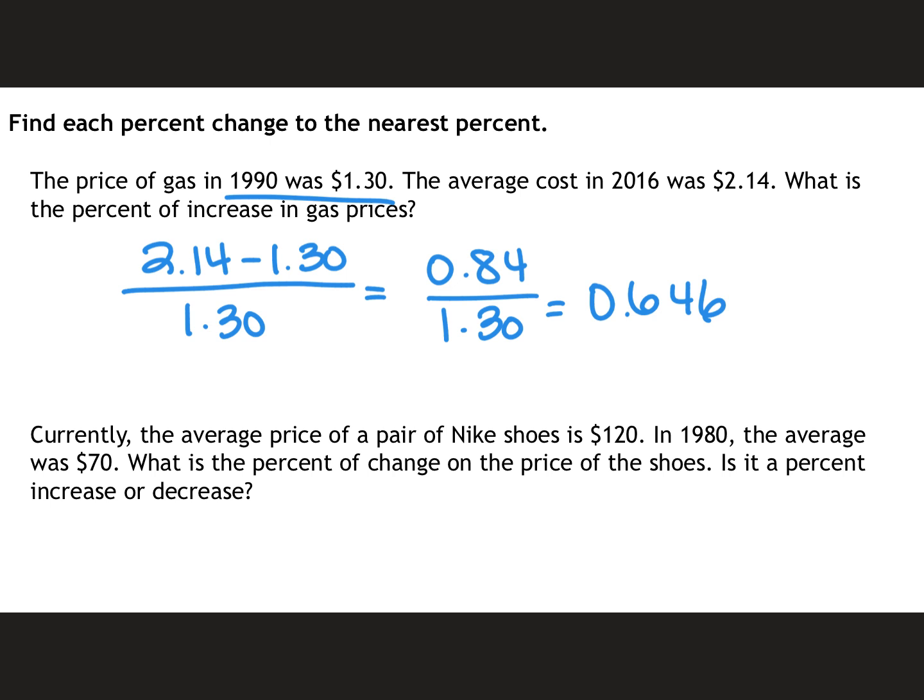Now that's a decimal that I have to turn into a percent. So to do that I'm going to move the decimal two spots to the right. Which is why I went three numbers past the decimal, just because it says round to the nearest percent, which would be the whole number. So now I have this for my answer. I'm going to round to the nearest percent, which is the spot in front of the decimal. Look to the six. Make it round up. Five or more raises the score. Which ends up being 65% increase. Because the cost has gone up. It's an increase because it started at a lower amount and I finished at a higher amount. Making it an increase.